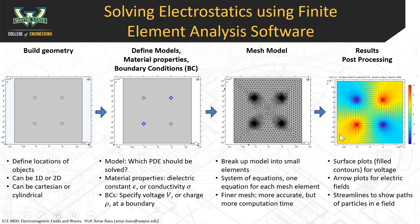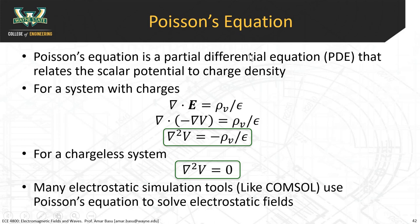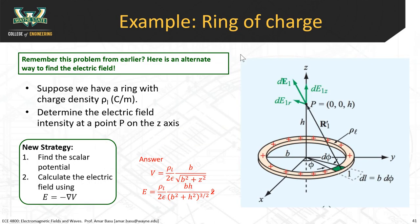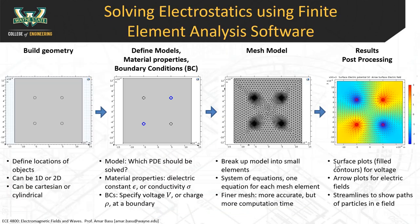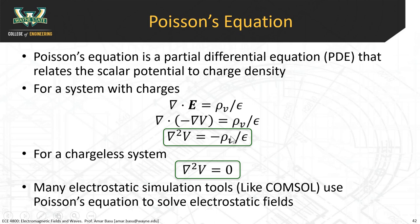We're going to show you how to use numerical software to figure out what the electrostatic potentials and the electric field lines are. Finite element tools solve for the electrostatic potential using Poisson's equation — they don't use the integration approaches like surface, volume, and line integrals. Poisson's equation comes right out of Maxwell's equations: del dot E, the divergence of E, is equal to rho_v over epsilon. That's the first Maxwell equation.